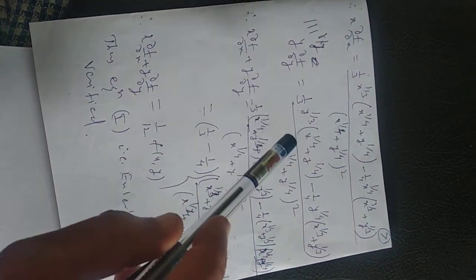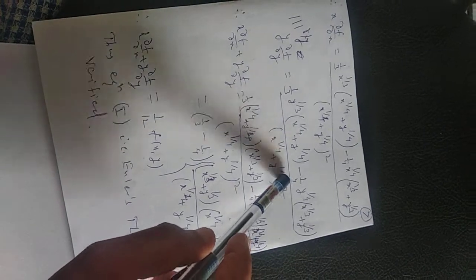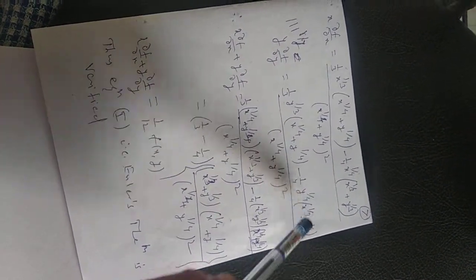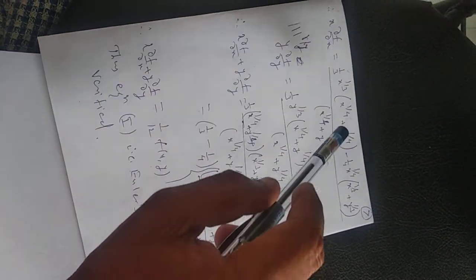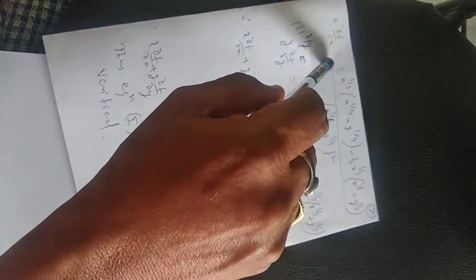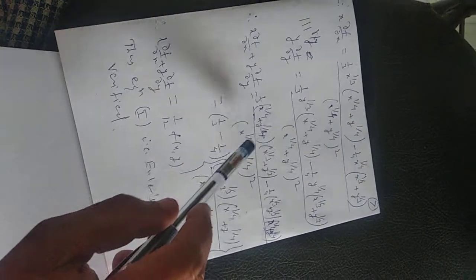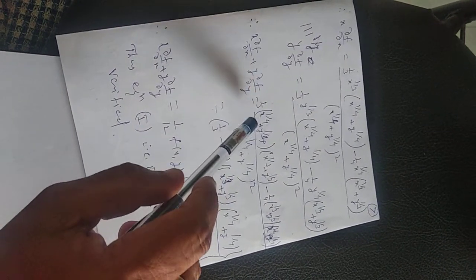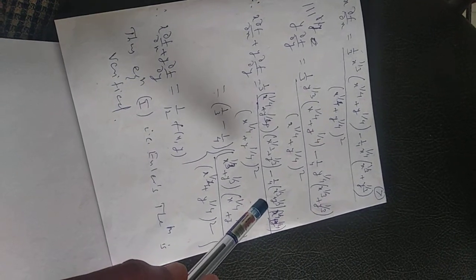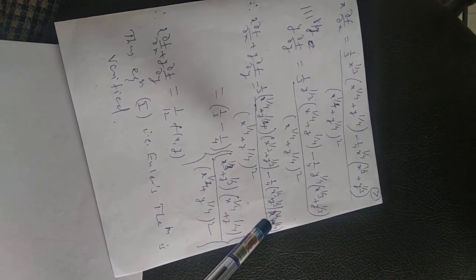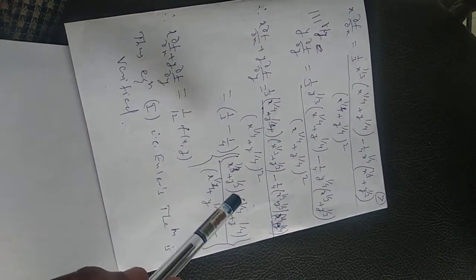Similarly, we find y · ∂f/∂y. So y · ∂f/∂y is (1/3) · y^(1/3) · (x^(1/4) + y^(1/4)) minus (1/4) · y^(1/4) · (x^(1/3) + y^(1/3)), divided by (x^(1/4) + y^(1/4)) squared. Our LHS is the addition of these two. Therefore, adding x·∂f/∂x and y·∂f/∂y, the denominator is the same, so we just add the numerators.